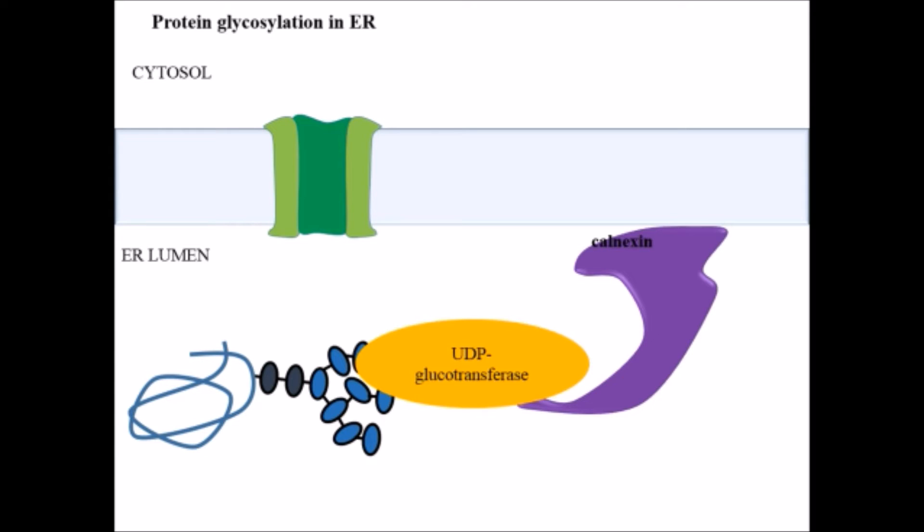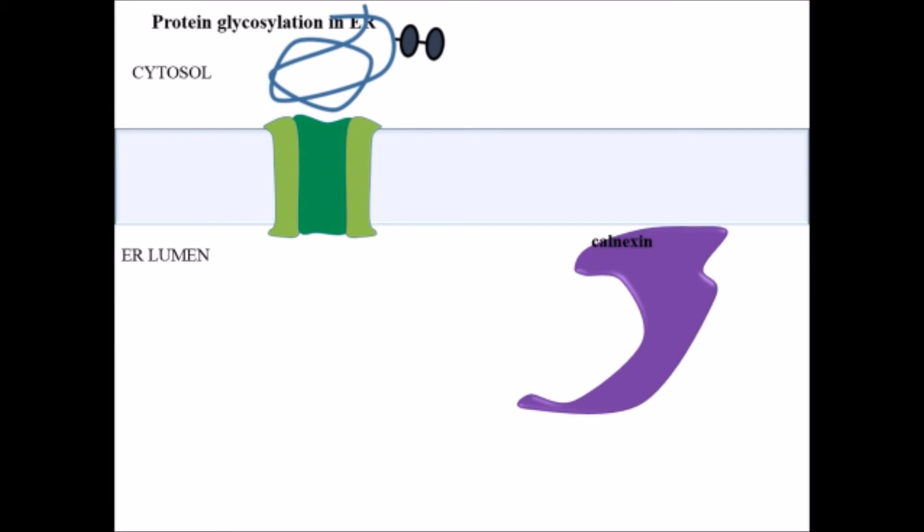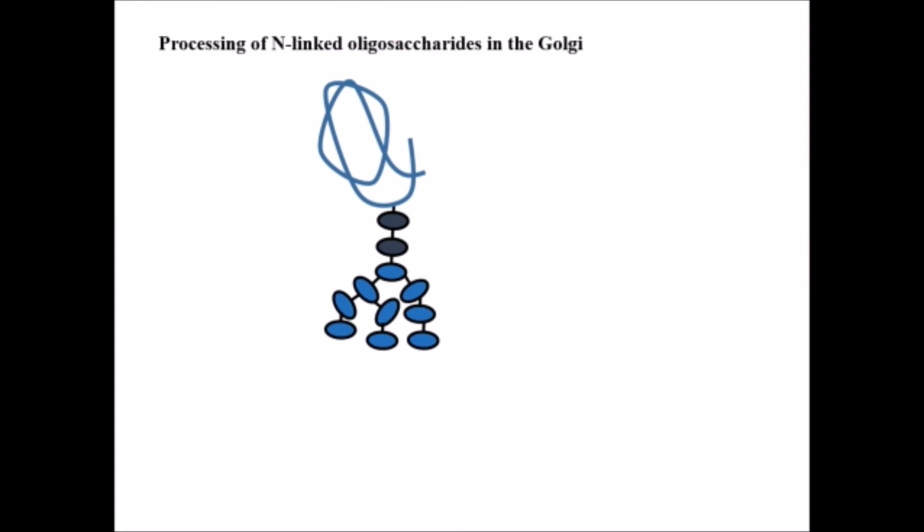If it is not properly folded, one glucose residue is again added with the help of UDP glucosyl transferase, and the process of binding with calnexin and checking proper folding is repeated. But if it is found that proper folding is still not achieved, all the mannose residues are removed and the protein is transported to the cytosol for ubiquitination.